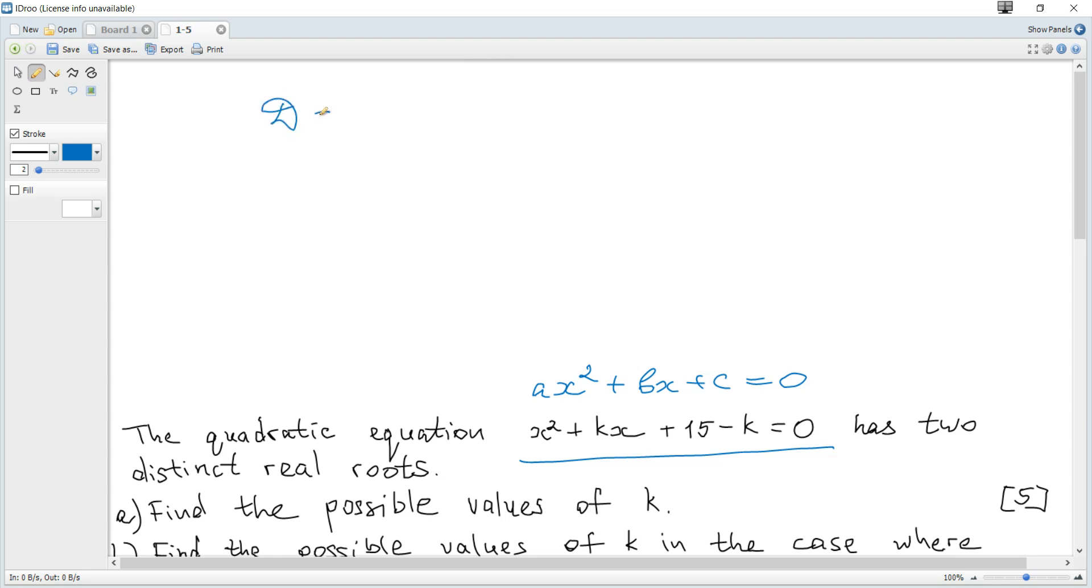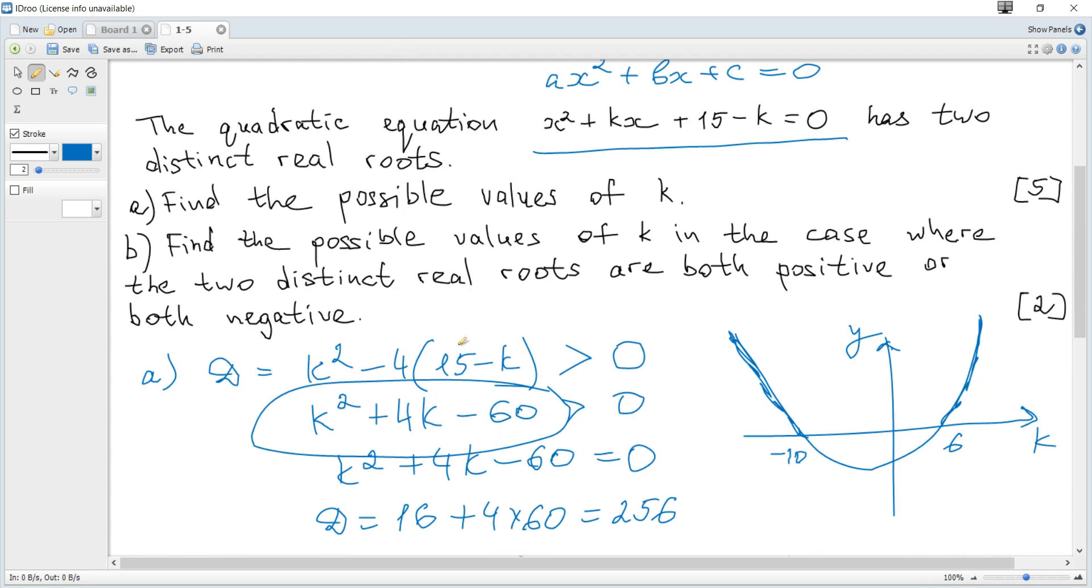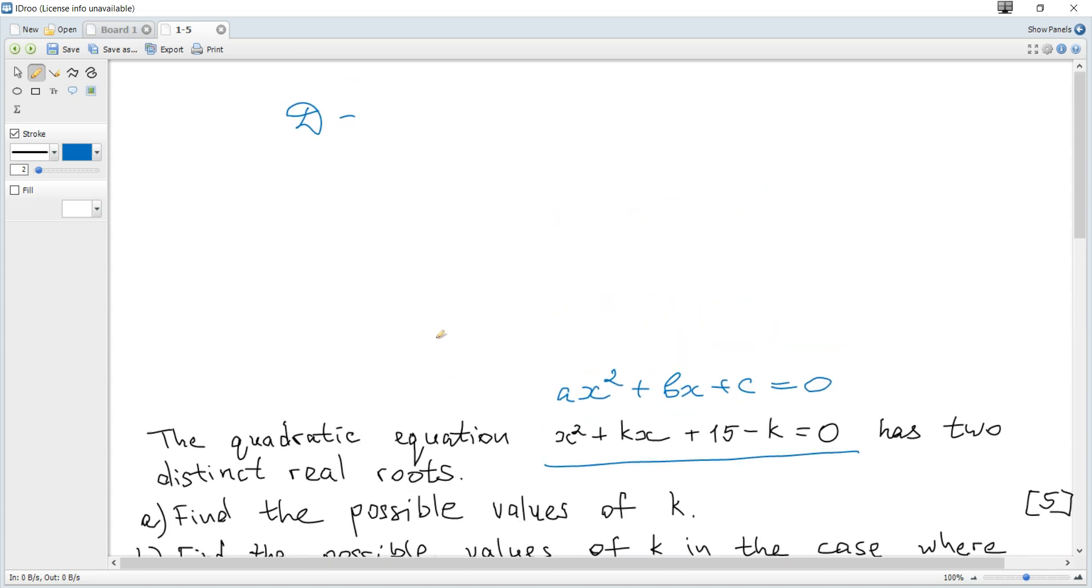The discriminant is b². Discriminant is actually this. Definitely it will be harder, but as an idea...